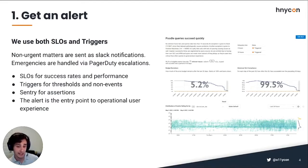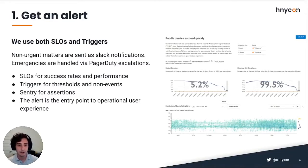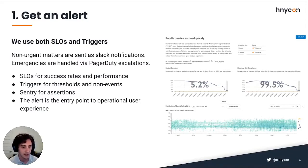Whatever alert we get is the entry point of the incident — there shouldn't be a need to navigate to a different dashboard. The moment we get the alert, we click the link and get into the data that lets us figure out what's going on. We use SLOs primarily for success rates and performance values — they're a proxy for our users' experience and satisfaction.